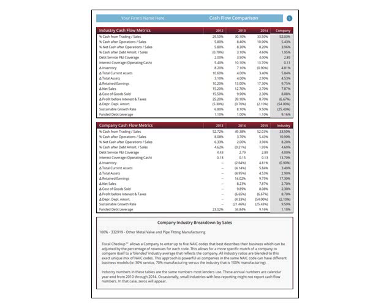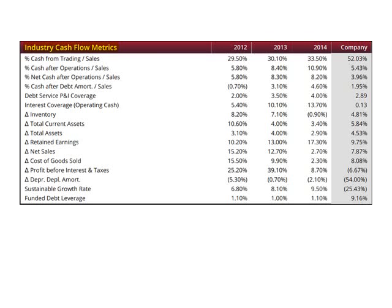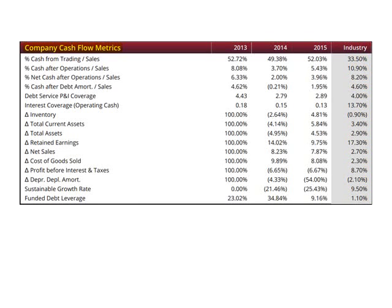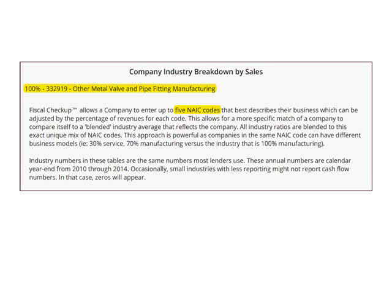Page five has two tables that contain cash flow metrics. The first table is for the industry cash flow metrics, containing three years of industry data compared to the last year of company data. The second table is for the company cash flow metrics, containing three years of company data compared to the last year of industry data. The third section of this page lists the NAIC code or codes used for the comparables. If more than one NAIC code is listed, the table also shows the percentage of revenue assigned to each code.